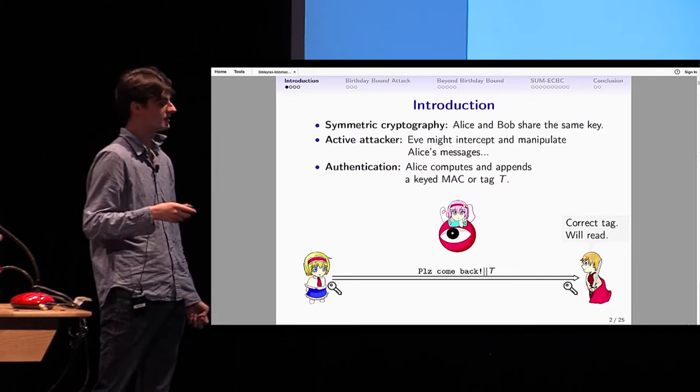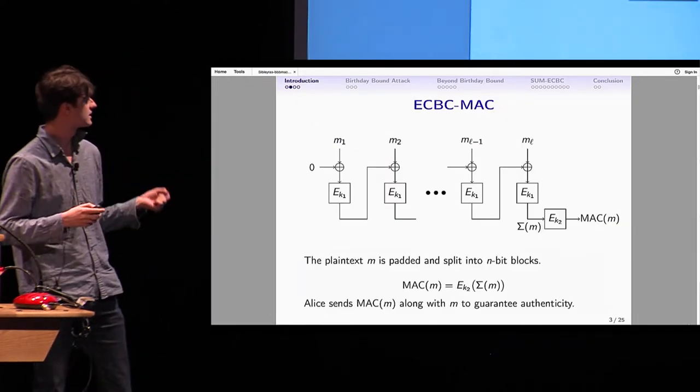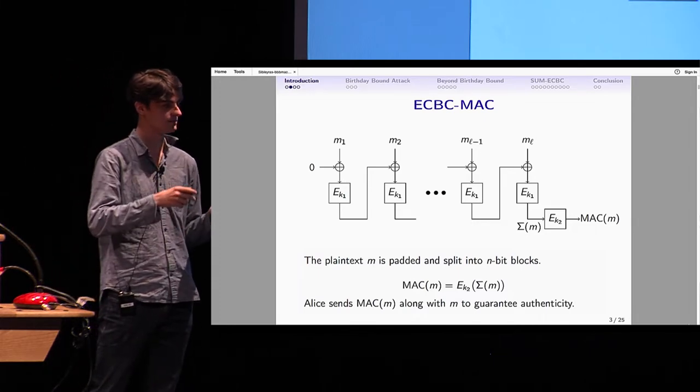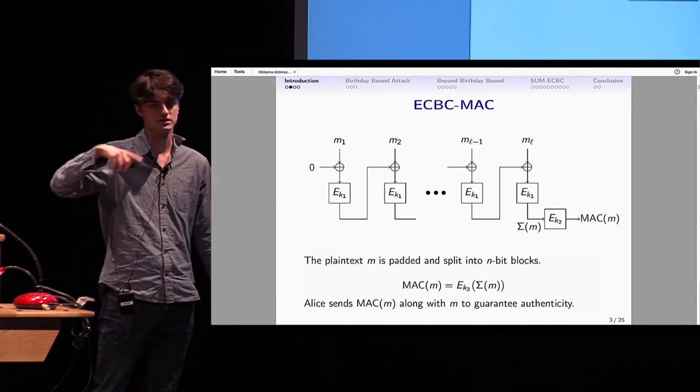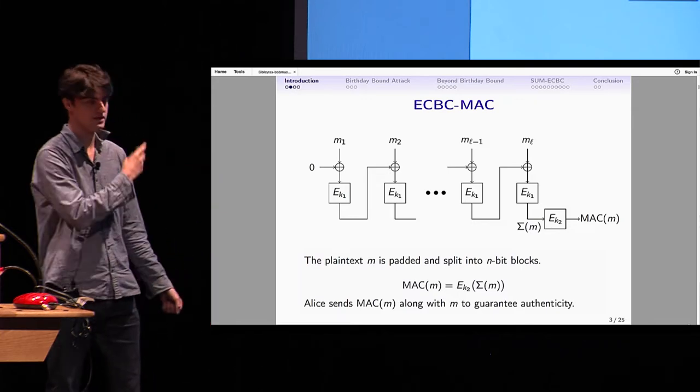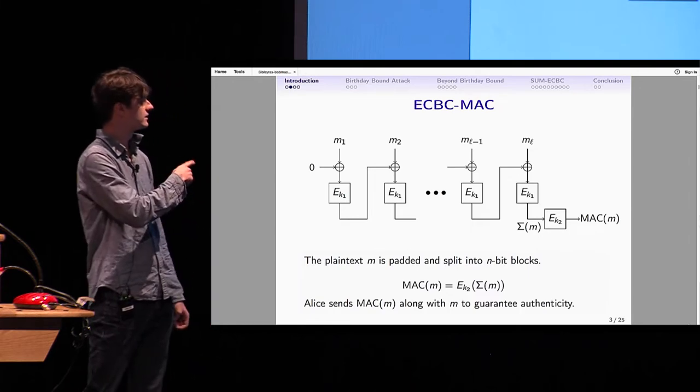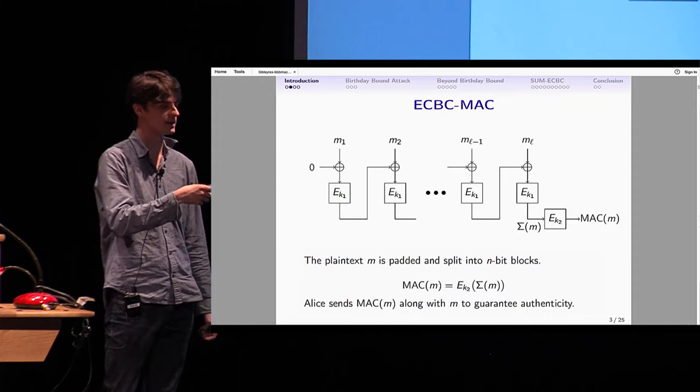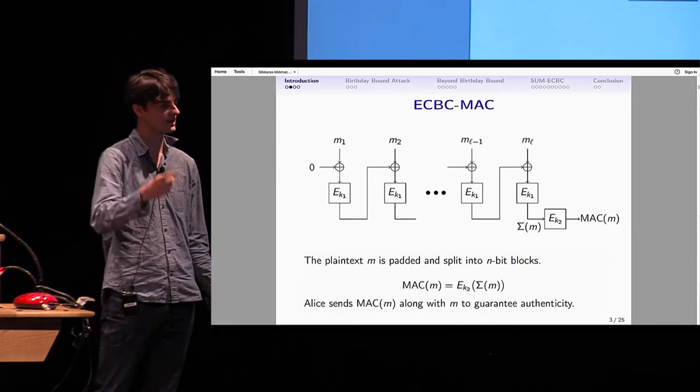For example, if Alice has a message M, she can use ECBC-MAC. She takes message M, pads it, splits into n-bit blocks, runs it through a CBC-like mode using any block cipher. The last block of the CBC, called sigma, is run through the block cipher using a different key, and you get the MAC.